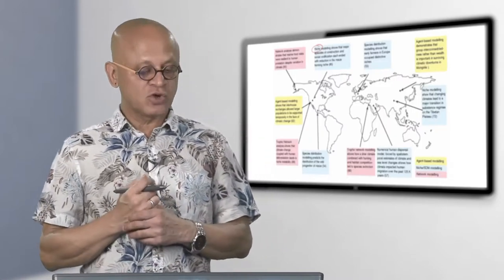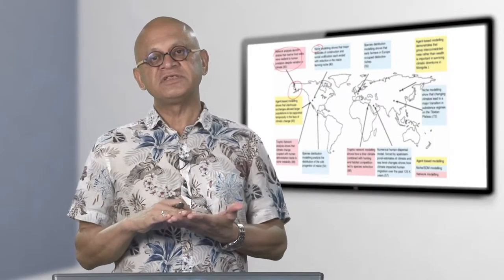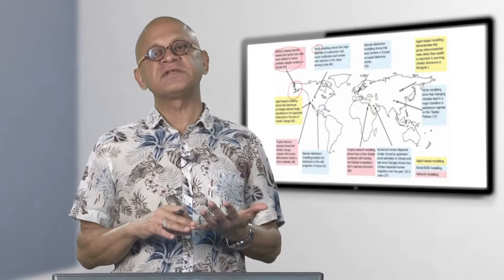Network analysis examines how species depend on each other — walruses, salmon, groundfish and so on. For example, network analysis in the Bering Strait region has shown that marine food webs have been resilient to human predation despite climate variation. This is important because it does not mean humans have no impact — rather, some marine ecosystems are more resilient than we realize, which matters when we consider the negative impacts of modern climate change.